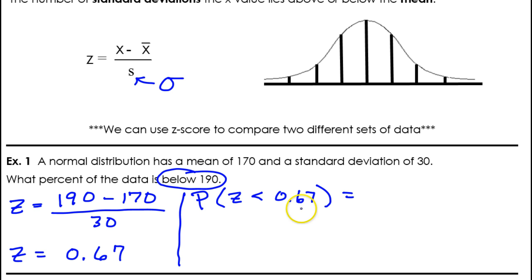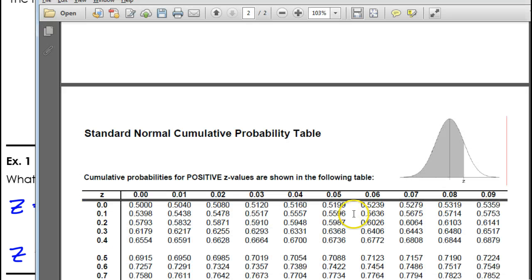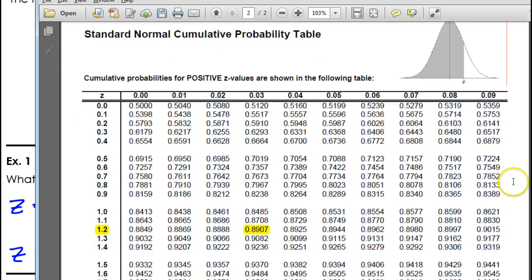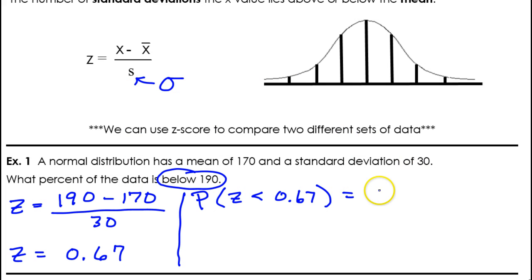So, here we go. Let's find the value of 0.67 and just read the percent right off the chart. Okay. So, 0.67. So, here's 0.6 right here. There's 0.6. Now, the 7 brings us to this column right here. So, as a percent, that becomes 74.86%. So, 74.86%. And that's it.